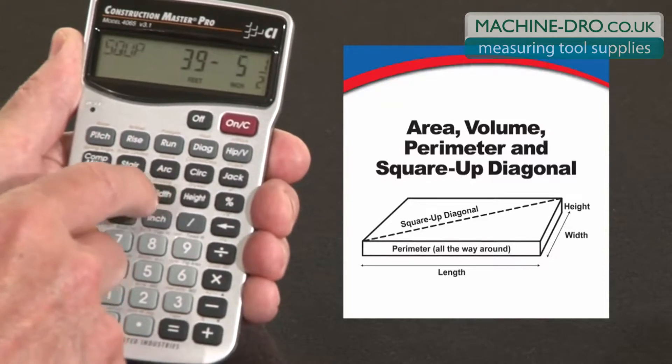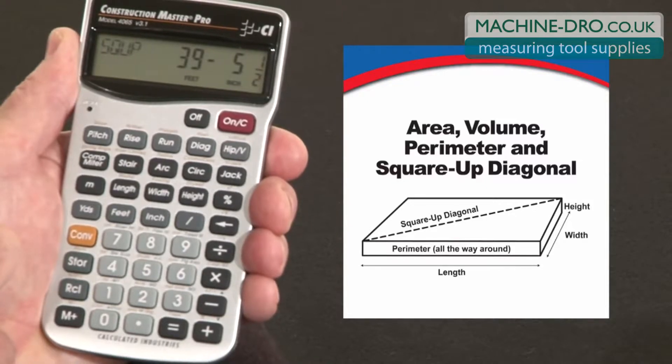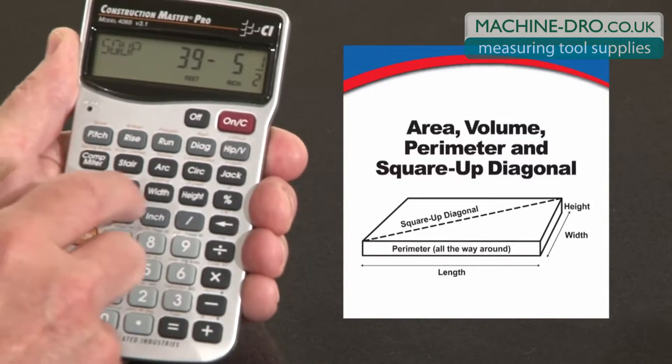I can press it again. It gives me the square up diagonals. So if you're going to be setting forms or pulling a tape, that's what you want to measure to get square 90-degree corners.